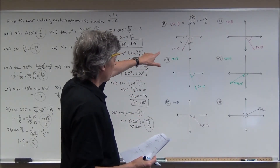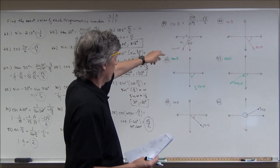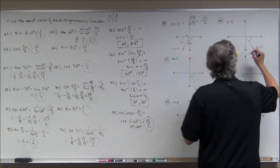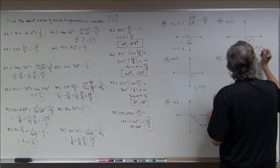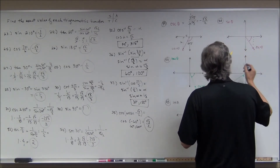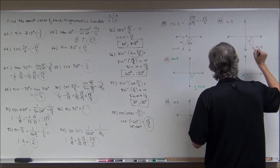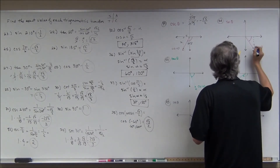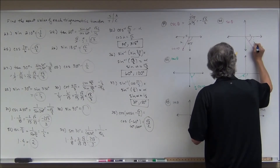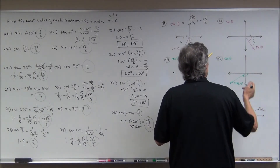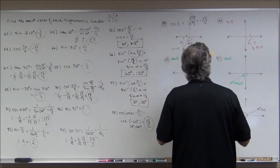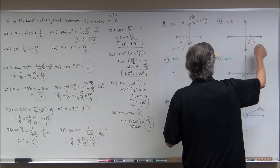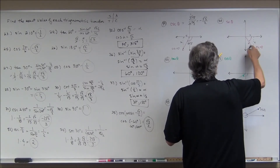If you haven't tried that one, try the next five before watching. Draw your right triangle — it doesn't matter if the angle is negative or positive. For the point (3, negative 4): the legs are 3 and 4, and using the Pythagorean theorem the hypotenuse is 5. The sine is opposite over hypotenuse: negative 4 over 5.